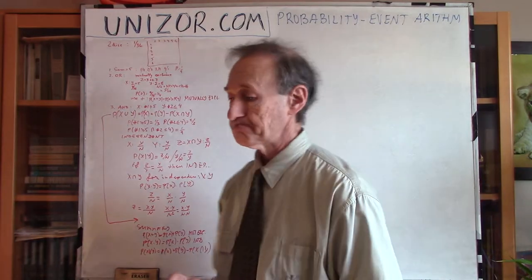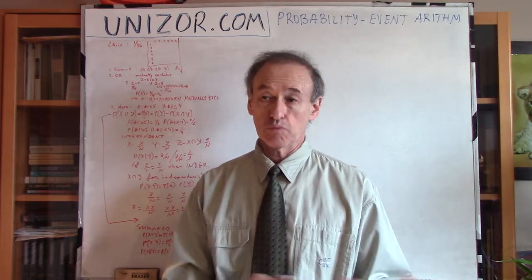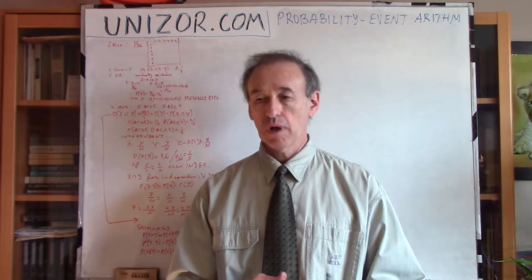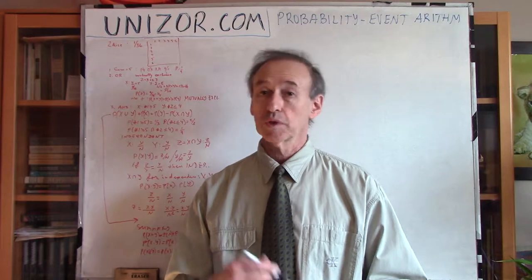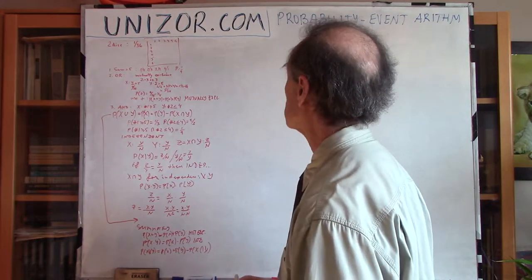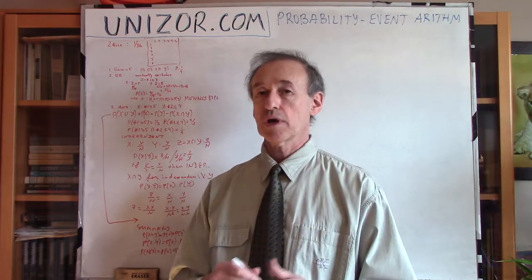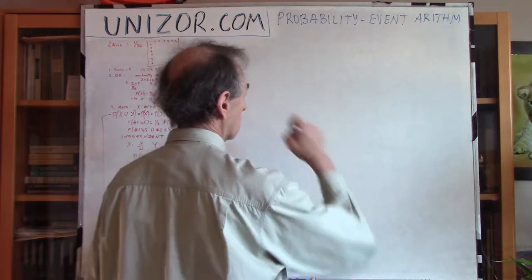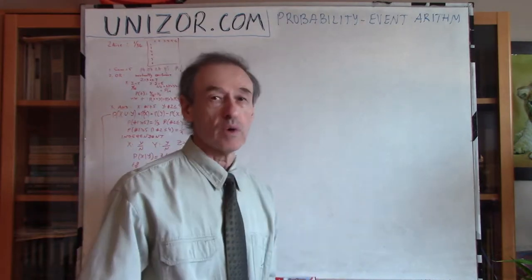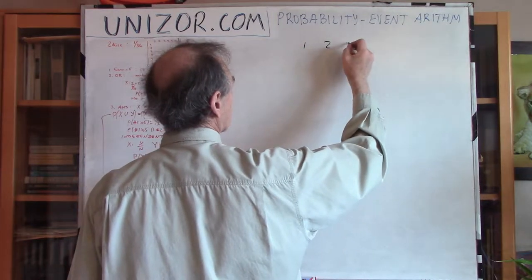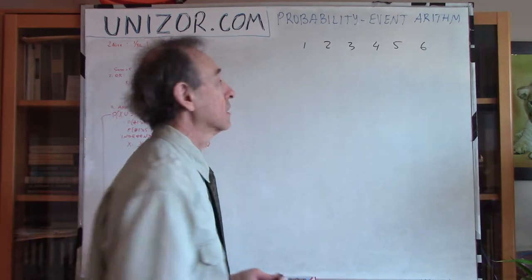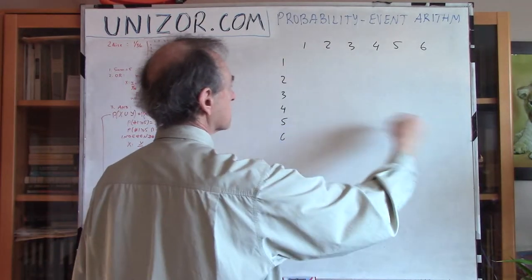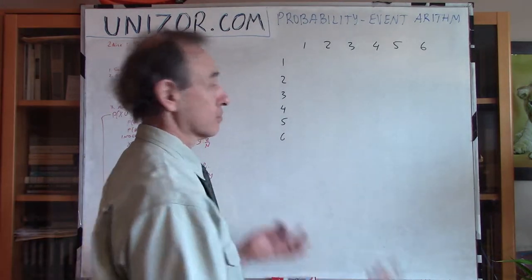I call this lecture 'event arithmetics.' I'm going to operate with events as with sets and subsets in the theory of sets. I will start with an example which will be the basis for this lecture, covering all the different operations I'm doing with events. This example is a very simple one: consider we are rolling two dice, each having the usual outcomes, and we record the result of each crossing of rows and columns.